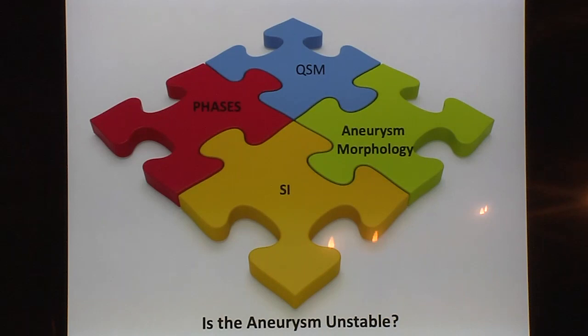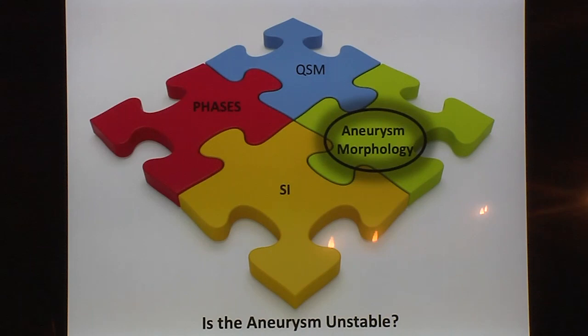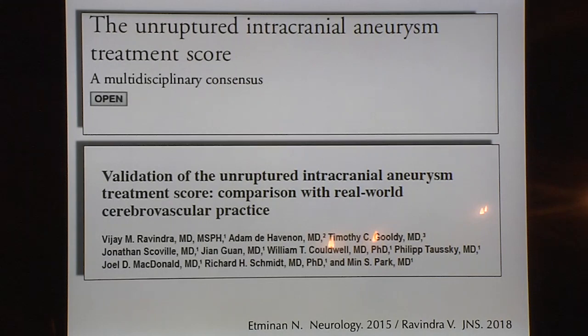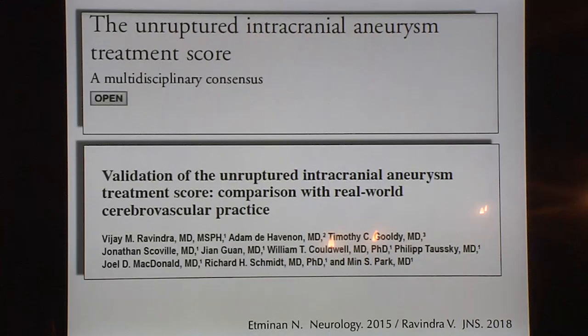As part of the prediction model, we have signal intensity of contrast enhancement in the aneurysm, and we also need to add the QSM protocol to quantify iron in the aneurysm wall. Morphology is another factor — everyone knows that aneurysms with daughter sacs or blebs are more unstable. Clinical data, including family history, also matters. The PHASES score and other scoring systems exist, but they don't capture everything, especially for populations not represented in the data.